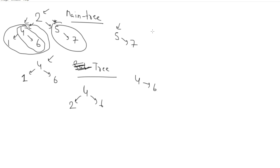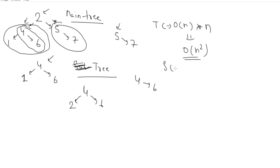Now for time complexity: checking whether two trees are identical is O(n). We need to do this for every node in the main tree, which has n nodes. So the total time complexity using this approach is O(n²). For space complexity, since we aren't using any extra space, it will be O(n) due to recursion.